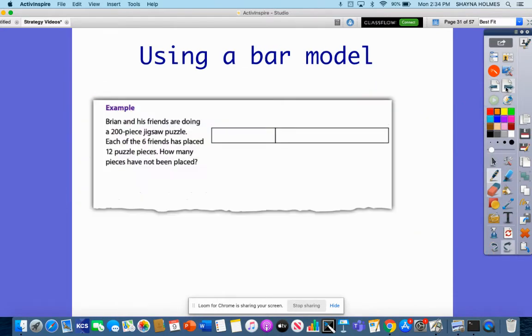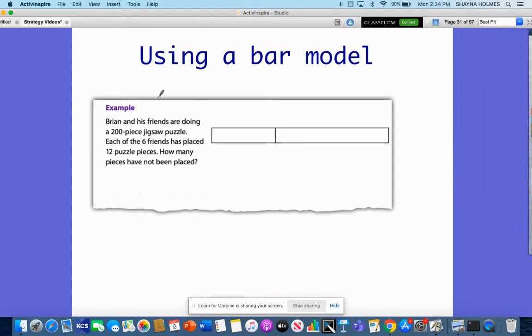Let's look at another example. For this one, we're going to use a bar model. This example problem says Brian and his friends are doing a 200-piece jigsaw puzzle. Each of the six friends has placed 12 puzzle pieces. How many pieces have not been placed? Once again, this hole is going to represent the whole, and the whole is 200 pieces.